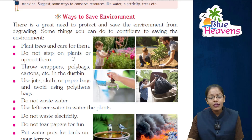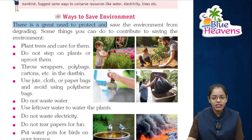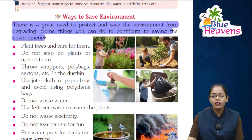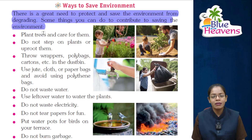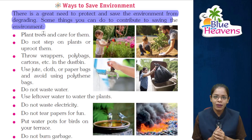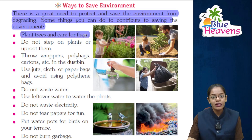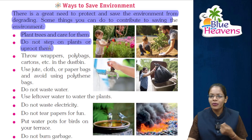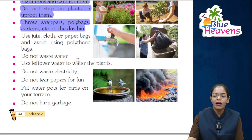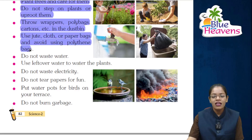Now, ways to save the environment. There is a great need to protect and save the environment from degrading. You can follow these points: plant trees and care for them. Do not step on plants or uproot small saplings. Throw wrappers, poly bags, cartons, etc. only in the dustbin. Use jute, cloth, or paper bags and avoid using polythene bags.